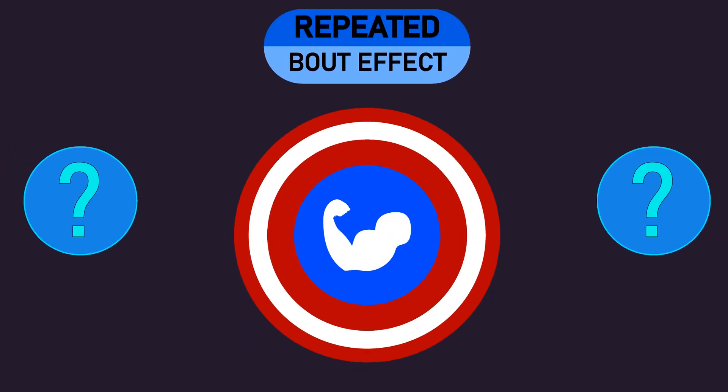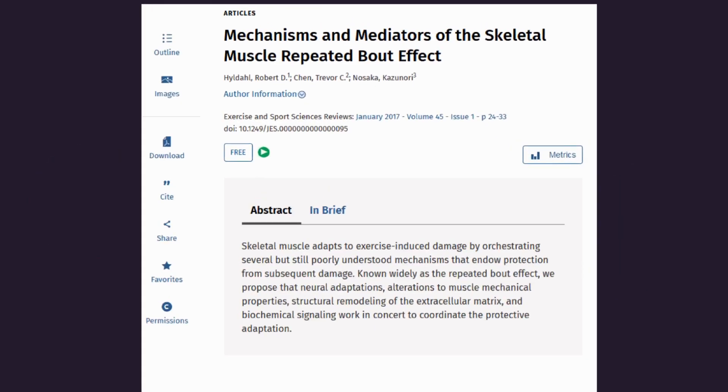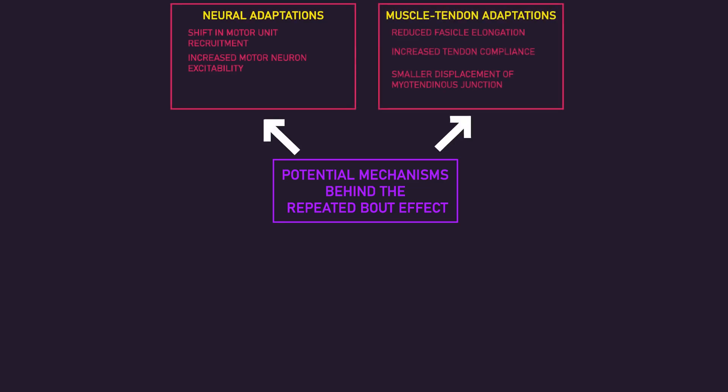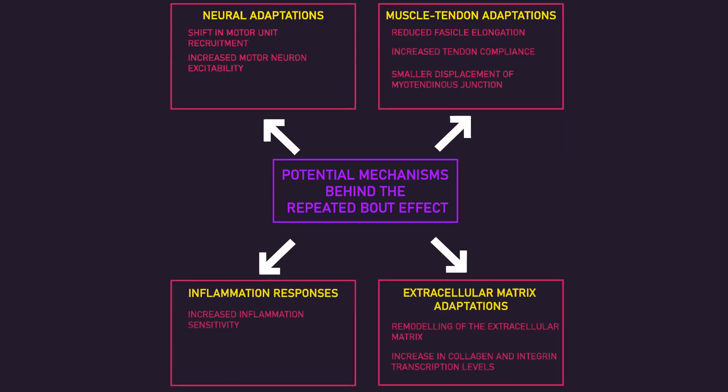It's not clear precisely what creates the Repeated Bout Effect, but a 2017 study hypothesized neural, muscle tendon, connective tissue, and inflammatory adaptations may all play a role.